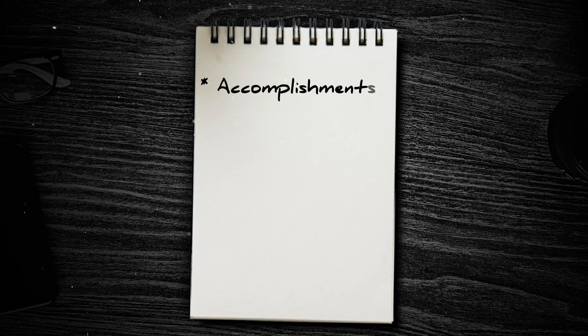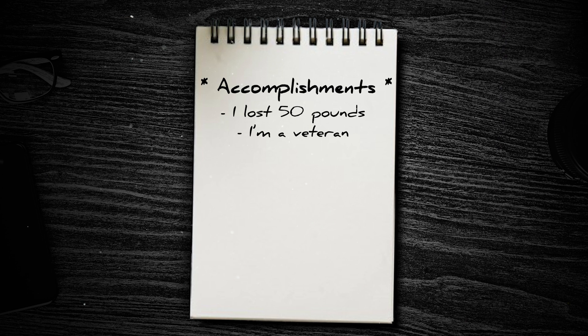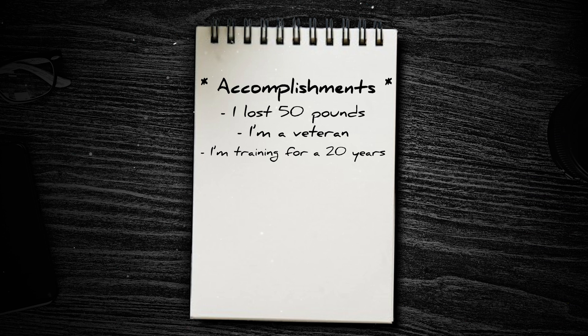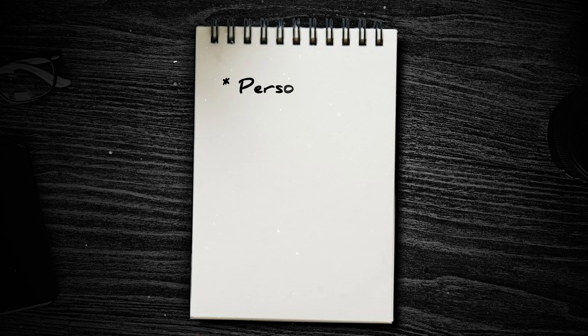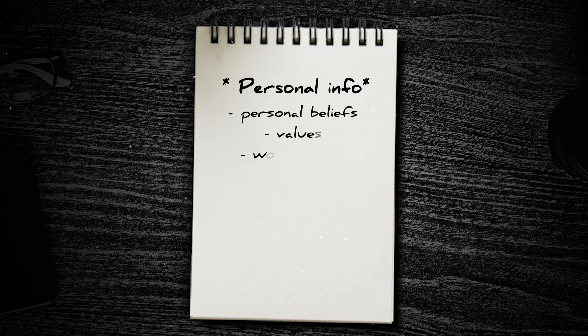Next, write down your accomplishments — everything you've achieved. If you lost 50 pounds, add that. If you're a veteran, add that. If you've been training for 20 years, add that too, because these are what we'll use to make your content unique. Finally, write your personal information: your beliefs, values, worldviews, and everything else relevant. This will take around 30 minutes, but it's the only real work you need to do — after this, there is no more work.